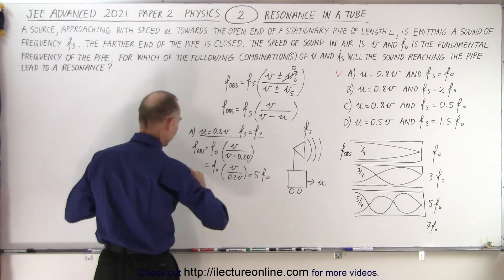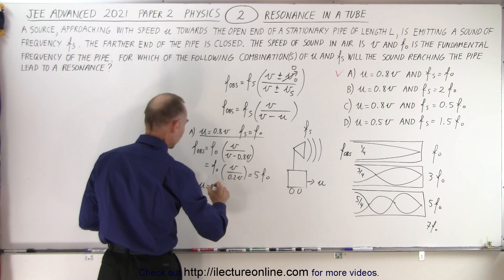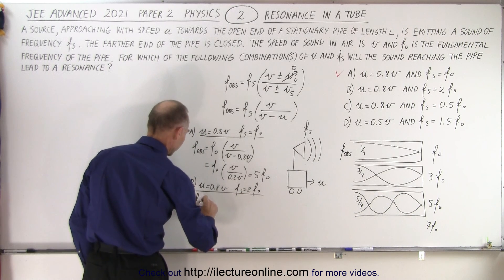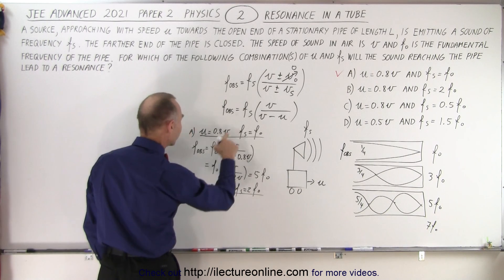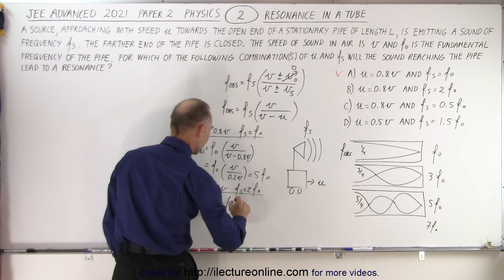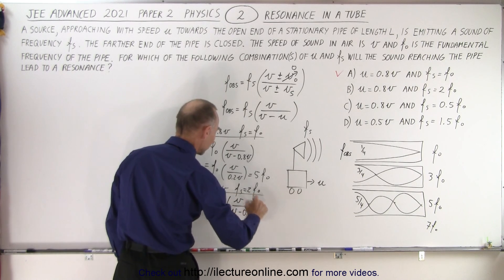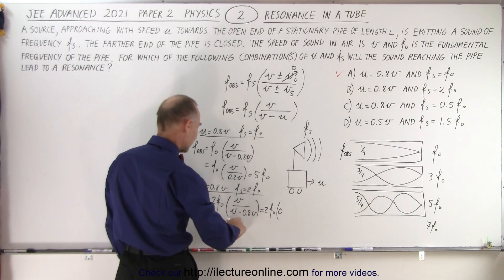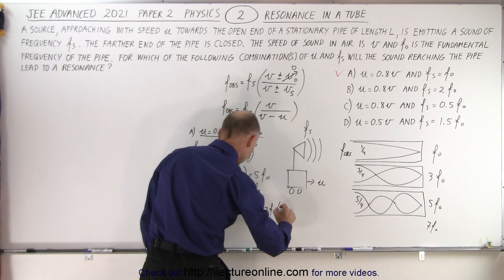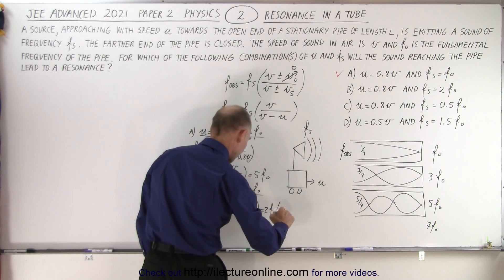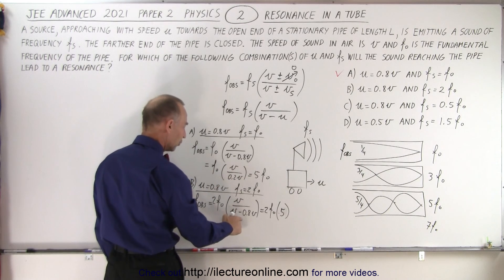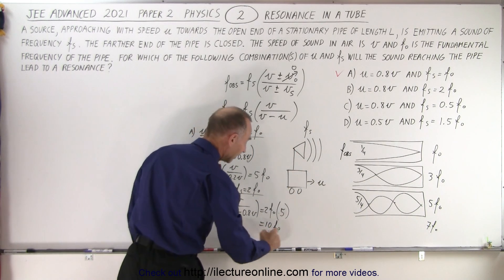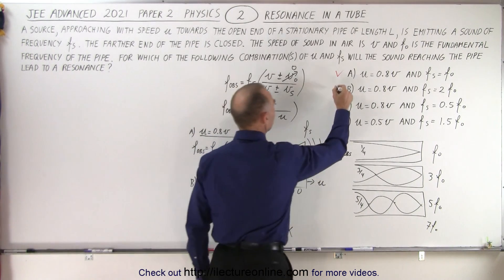For answer B: u equals 0.8v and f sub s equals 2 times the fundamental frequency. So f observed equals 2f sub nought times v divided by (v minus 0.8v), which equals 2f sub nought times v divided by 0.2v, which is 2f sub nought times 5, giving 10f sub nought. The resonance frequencies are 1, 3, 5, 7, 9, 11 — not 10 — so this will not give a resonance frequency.